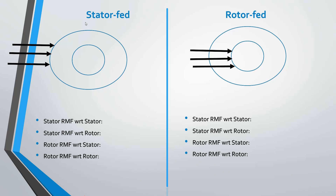Let's start with the stator fed induction motor. Stator fed means we are feeding the AC supply to the stator. This is your stator and this is your rotor. Now the rotating magnetic field developed in the stator — its speed will be given by NS — and this will cause another rotating magnetic field inside the rotor whose speed will be SNS. Due to this rotating magnetic field, your rotor will rotate at speed N, where N is equal to (1 minus S) times NS.